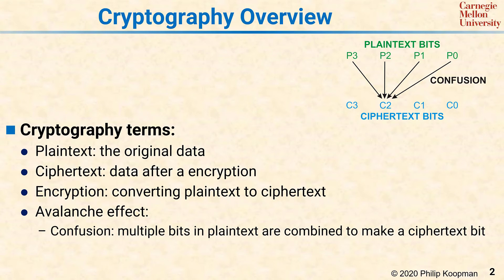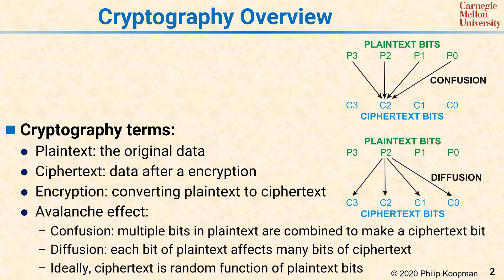The other side of that same coin is diffusion. Diffusion works sort of the other way — each bit of plain text affects many of the bits of ciphertext. In particular, what you'd like is if a single bit of the plain text changes, then all the bits of the ciphertext change. For mathematical purists, all these changes are with probability 0.5. What this amounts to is that the ciphertext is a random function of the plain text bits.